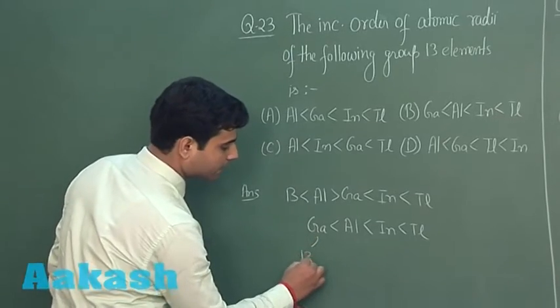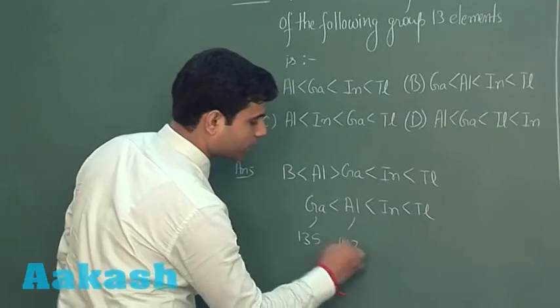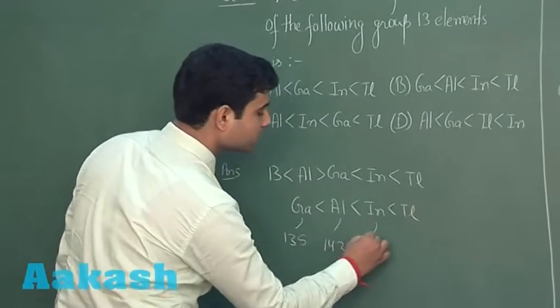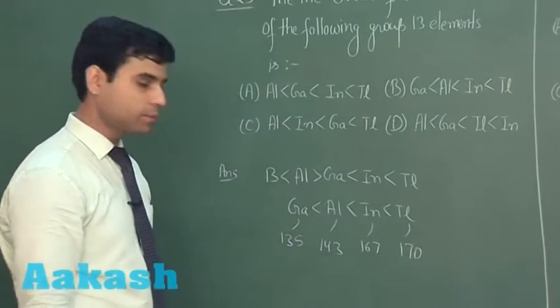the gallium has 135 picometer atomic radii, aluminum has 143 picometer atomic radii, indium has 167 picometer atomic radii and thallium has 170 picometer atomic radii.